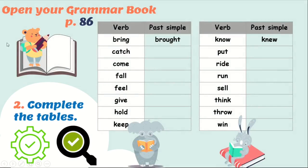Now open your grammar book, page 86. Here are some common verbs that are considered to be irregular when changing from present to past. Let's learn them and try to memorize them together. We're going to complete the tables: bring / brought, catch / caught, come / came.